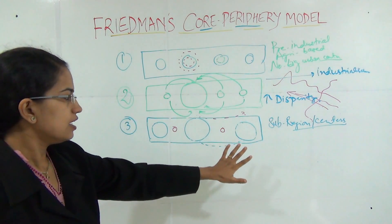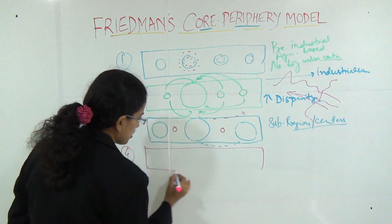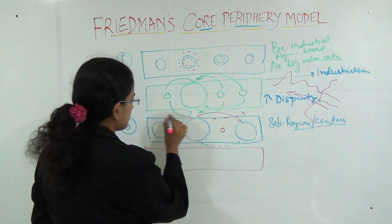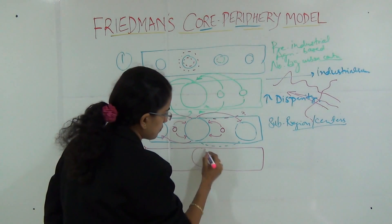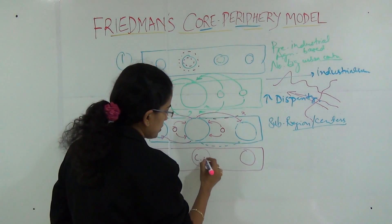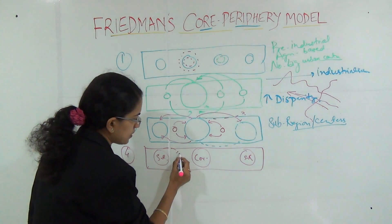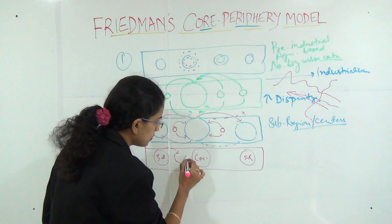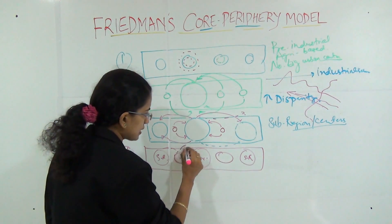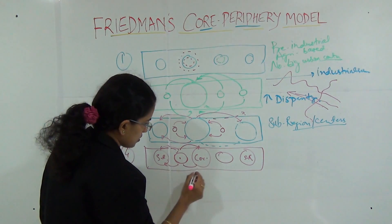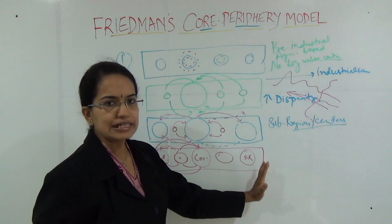Finally, in Stage 4, you have the core and the developed subregions, and due to the influence of the subregions, the small peripheral centres also start to grow in size. There is interaction between each of the elements — between the core, sub-centres, and the periphery — resulting in sequential development or growth of the complete region.